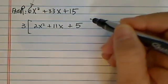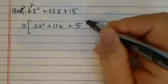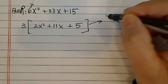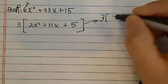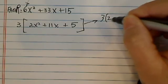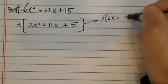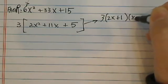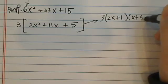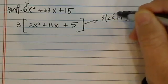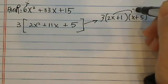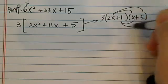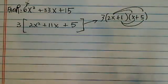Now in our case this is not too bad because it's a 2. So if you see it already, it's 2x plus 1 and x plus 5. Let's check it: 2x squared, this is a 10x and this is 1x and this is 5. If you already see it, great.